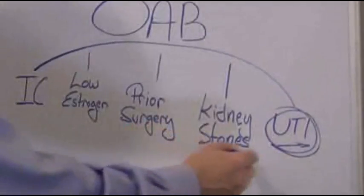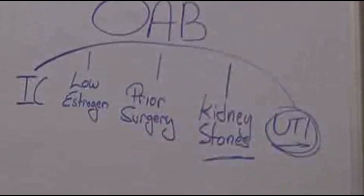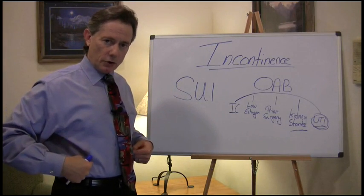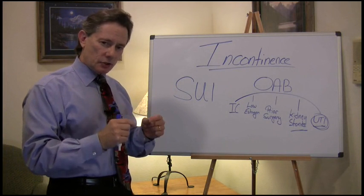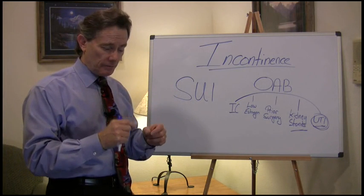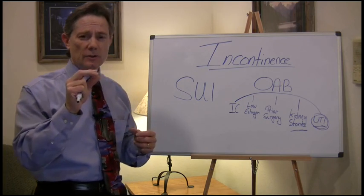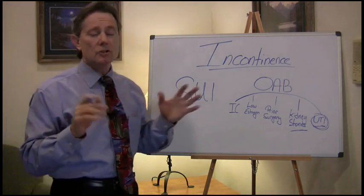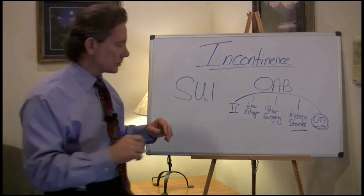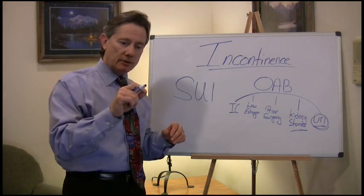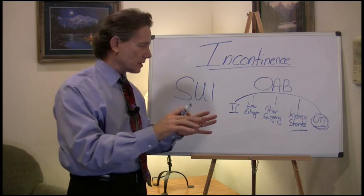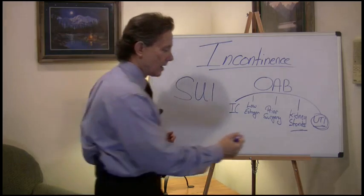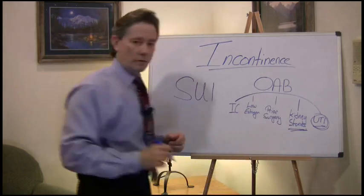What about kidney stones? If somebody has kidney stones, as those stones are coming from the kidneys down through what we call the ureters down to the bladder, once that stone hits the bladder, it's very irritating. If you could see those under a microscope, they've got all these little points on them and they look painful. As that stone is bouncing around inside the bladder until you actually excrete it, that can trigger some spasms in your bladder. So that's another cause for overactive bladder.